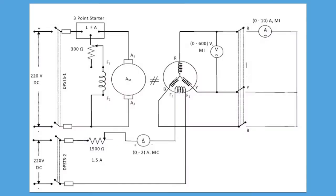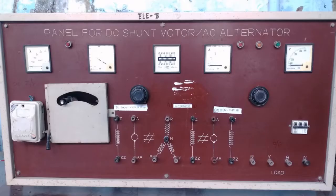This is the circuit diagram for a three-phase alternator to build up the voltage by using a DC shunt motor. And this is the panel board for this practical — DC shunt motor with three-phase alternator.